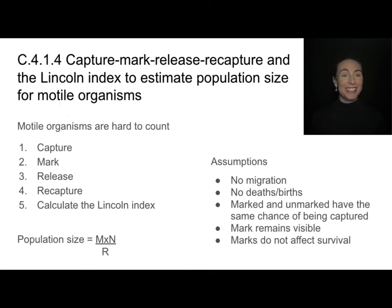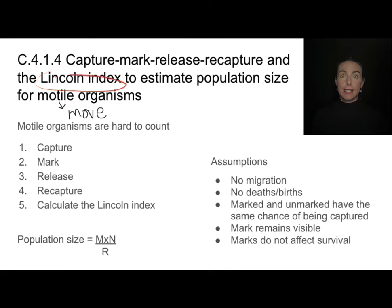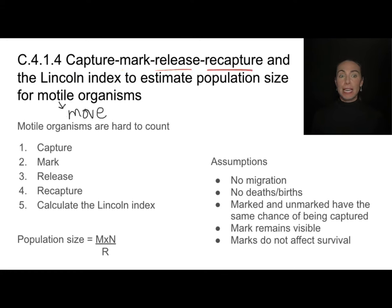Quadrat sampling does not work very well for motile organisms, because motile organisms move and it's really hard to count moving organisms. So we estimate their population size by calculating what's called the Lincoln index. The Lincoln index is an estimate for population size using a method called capture-mark-release-recapture, which is exactly what it sounds like.